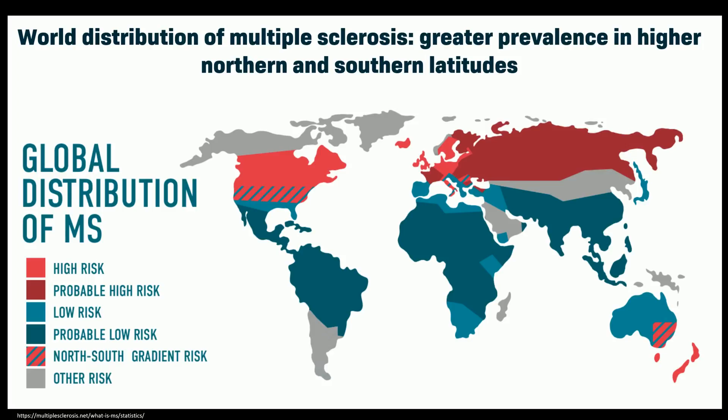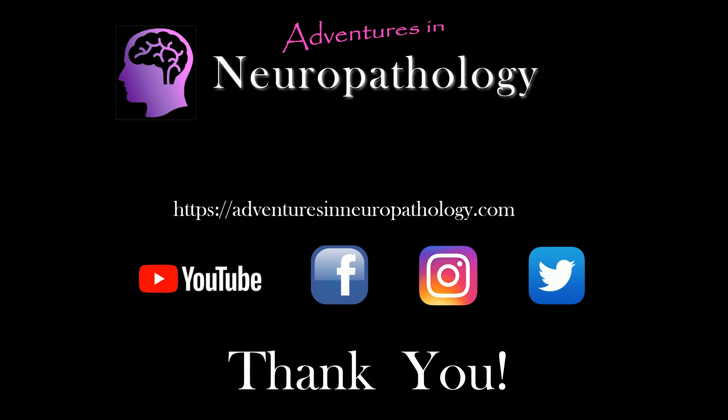That is our whirlwind tour of the introduction to the pathogenesis of multiple sclerosis. In further parts of this series, I'll be talking about the microscopic recognition of multiple sclerosis and what it looks like under the microscope. That wraps it up for this current show. Please join us next time on Adventures in Neuropathology. Be sure to check us out on YouTube, Facebook, Twitter, and Instagram.